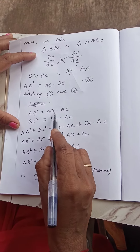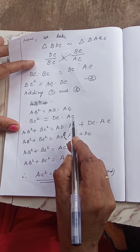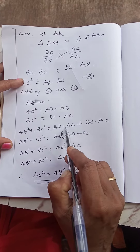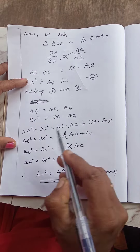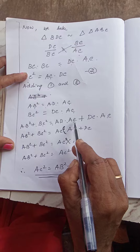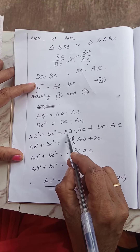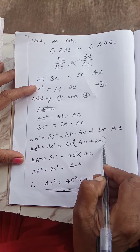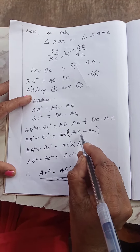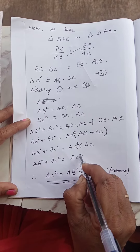AB square is equal to AD into AC, and BC square is equal to DC into AC. So AB square plus BC square is equal to AD into AC plus DC into AC. Here AC is common, so we take AC outside. The remaining is AD plus DC. AD plus DC is equal to AC. So AC into AC is equal to AC square.